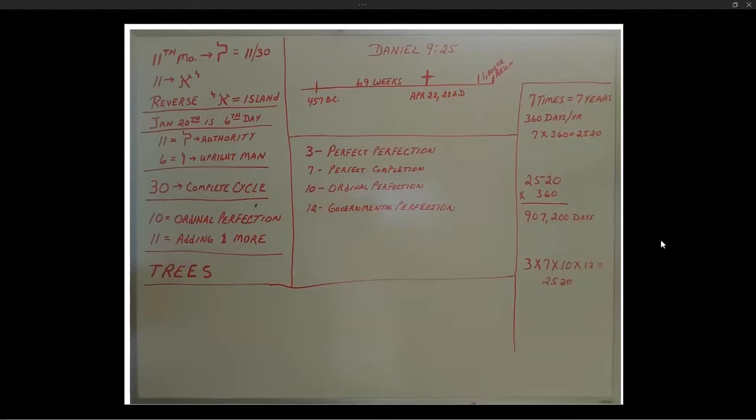I just want to read the scripture over in verse 25. It says, know therefore and understand that from the going forth of the commandment to restore and to build Jerusalem unto Messiah the Prince shall be seven weeks and threescore two weeks, the streets shall be built again and the wall even in troublous times. Verse 26: and after threescore two weeks shall Messiah be cut off but not for himself, and the people of the Prince that shall come shall destroy the city and the sanctuary, and the end thereof shall be with the flood, and unto the end of the war desolations are determined.